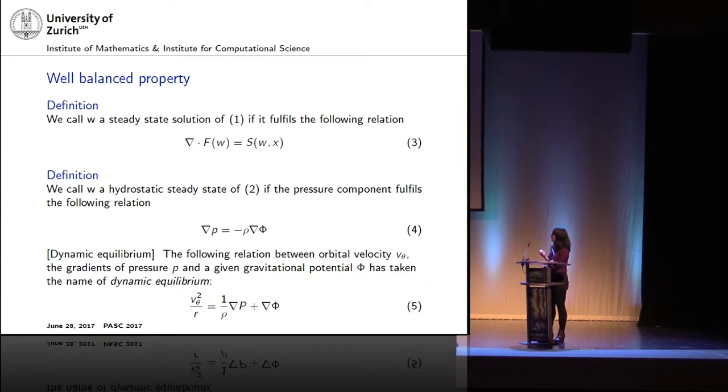Some more definitions just for the sake of discussion in the results. Essentially, first, by definition, also, if you have a steady-state solution, this W will satisfy this relation, which is the balance of the divergence and the source term. Further on, if we look at the specific Euler equations, first, a hydrostatic steady state is given by this relation. Here we note that the velocity is going to be zero. What we have to balance is the gradient of the pressure and the gradient of some potential.